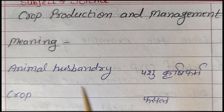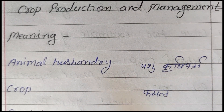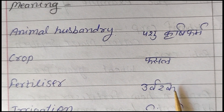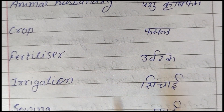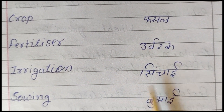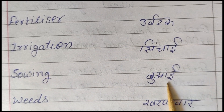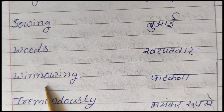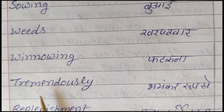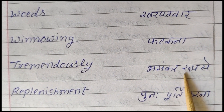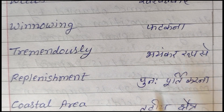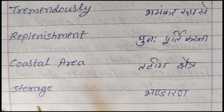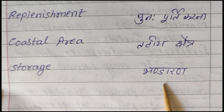Key vocabulary for this lesson: Animal Husbandry (Pashuk Palhan), Crop (Fasal), Fertilizer (Urbarak), Irrigation (Sinchai), Sowing (Buhai), Weeds (Kharpatwar), Harvesting (Phatakna), Tremendously (Vahankar Roop Se), Replenishment (Punapurti Karna), Storage (Bhandara).